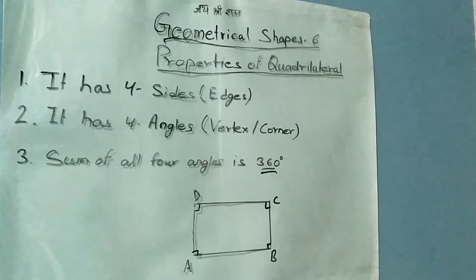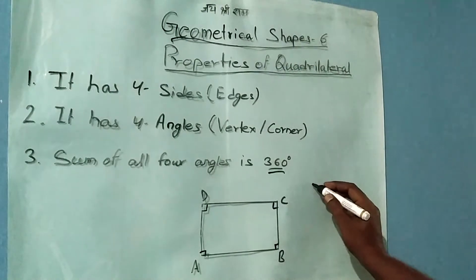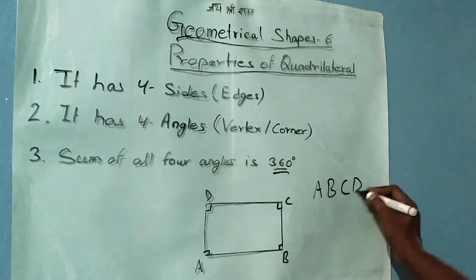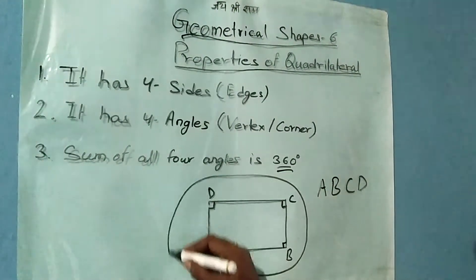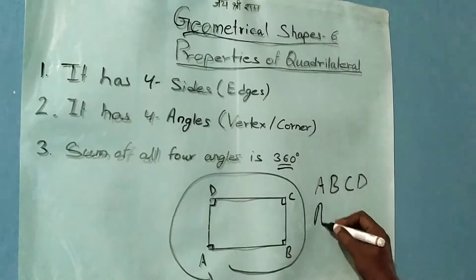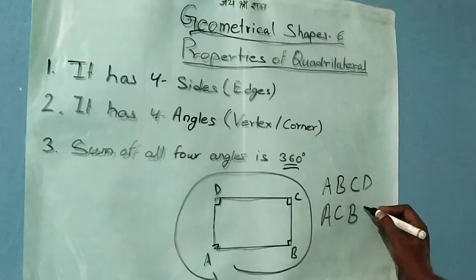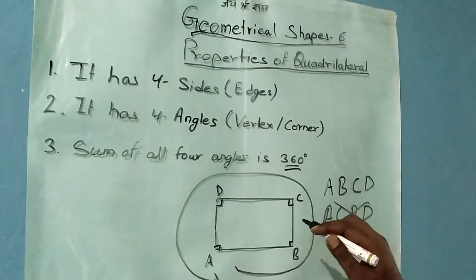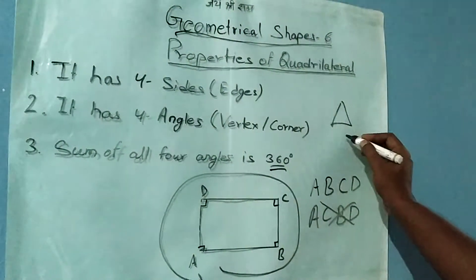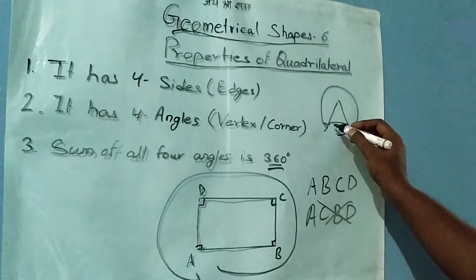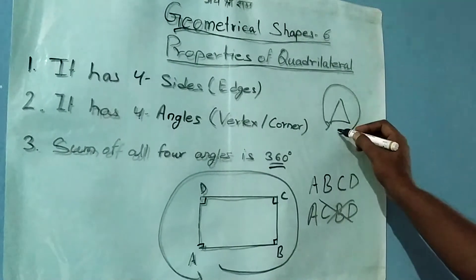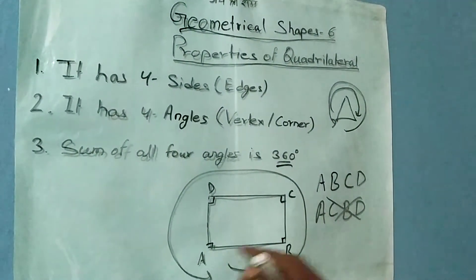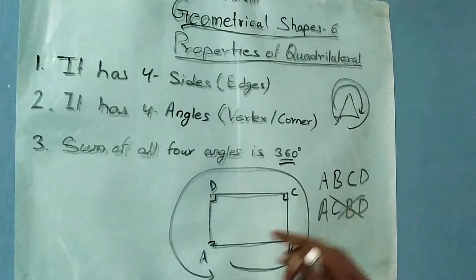One more thing: when writing the name of a quadrilateral, we should write it in cyclic order — A, B, C, D. This is the cyclic way. We should not write it like A, C, B, D — that is wrong. Whenever we write the name of any shape, we write in cyclic order. In a quadrilateral we can write ABCD or ADCB, but it must be in cyclic order.